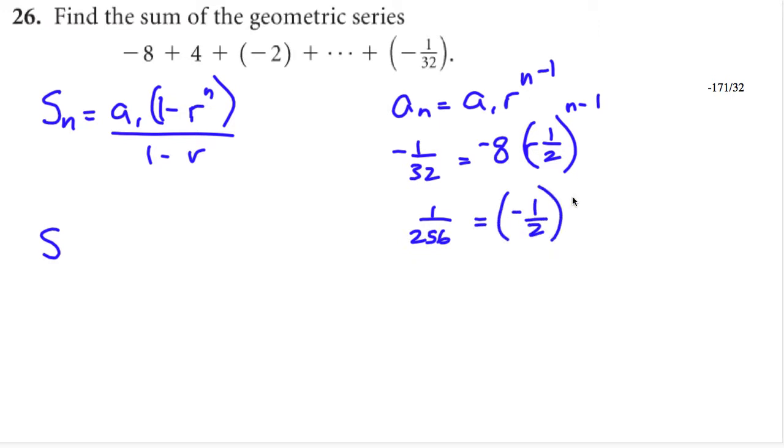So divide both sides by negative 8 and I'll get a positive 1 over 256 is equal to negative 1 half to the n minus 1. And here I get into trouble a little bit because I've got a negative 1 half here.